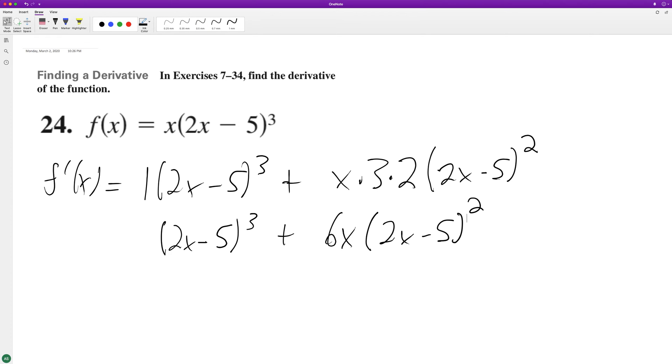What we can do here is we can factor out, well we can leave it like that. But this does eventually reduce down to two x minus five squared times eight x minus five.